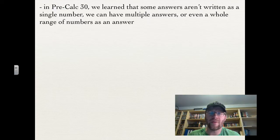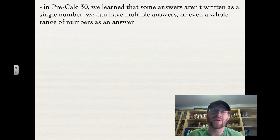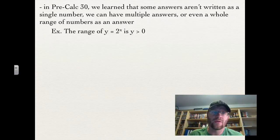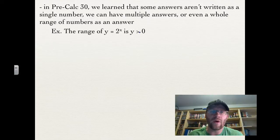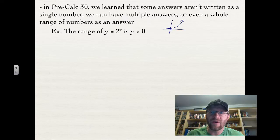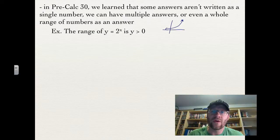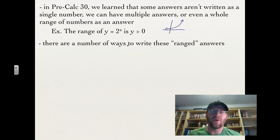In PreCalc 30, we learned that some answers aren't written as single numbers — we can have multiple answers or even a whole range of numbers as an answer. For example, the range of y equals 2 to the x is y is greater than 0, because the exponential graph gets really close to 0 but never actually reaches it, and goes upwards to infinity.